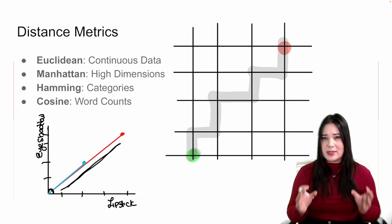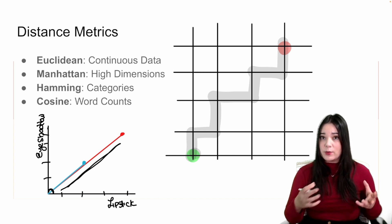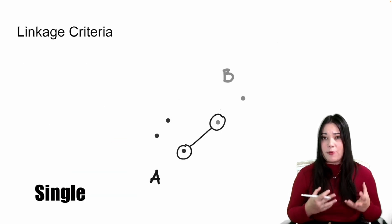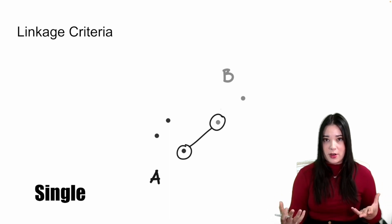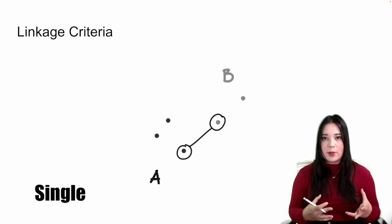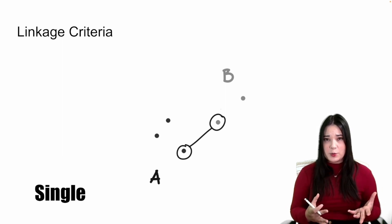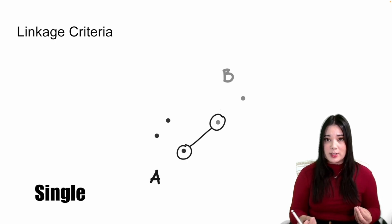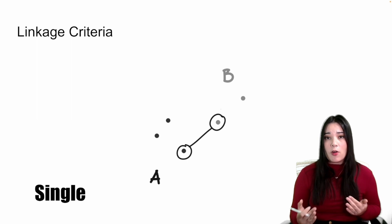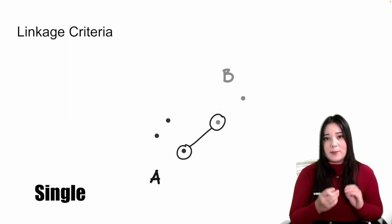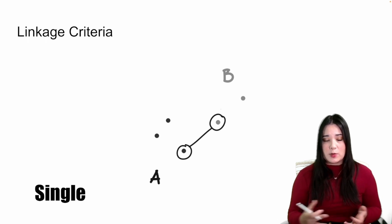A distance metric helps us decide how far apart two individual points are. However, we're not always working with individual points, so the other thing we need to think about is how do we define how far apart two clusters are? In order to do that, we have to choose a linkage criteria. The first linkage we can look at is single linkage. Single linkage looks at the minimum distance between our clusters — in other words, it looks at all pairs of points where one point is in cluster A and one is in cluster B, and the minimum of those distances is our distance between clusters.